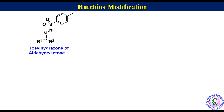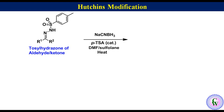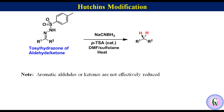Hutchins modification: In the Hutchins modification, tosylhydrazones are allowed to react with mild hydride donors like sodium cyanoborohydride in the presence of a catalytic amount of acid like para-toluenesulfonic acid in DMF and sulfolane under heating conditions to produce alkane. One thing to note is that aromatic aldehydes or ketones are not effectively reduced by this method.